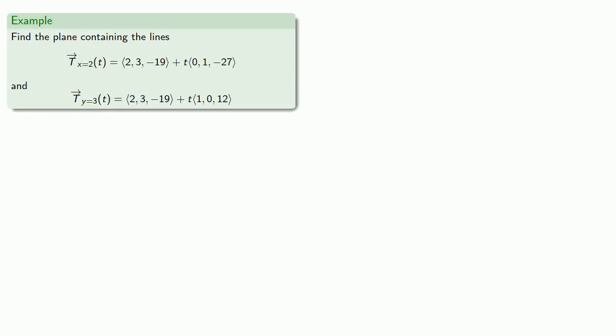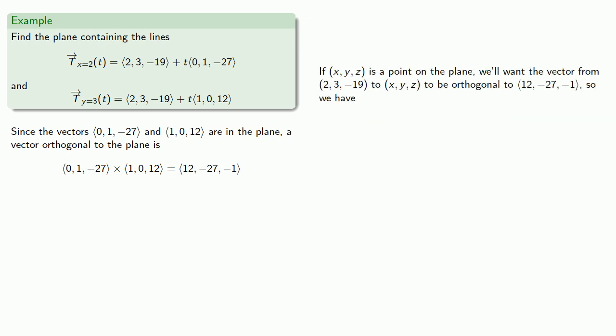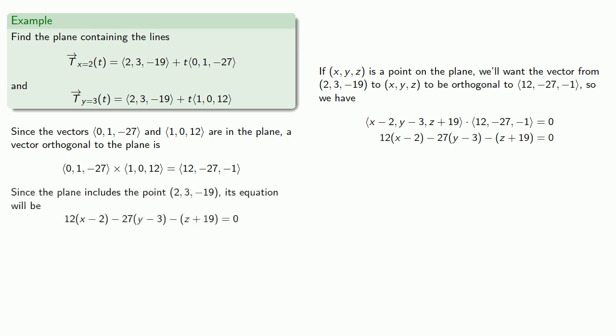So let's actually find that plane. So we know the equations of both lines. So since the vectors 0, 1, negative 27, and 1, 0, 12 are in the plane, a vector orthogonal to the plane is going to be the cross product. So we find the cross product. So if xyz is a point on the plane, then we'll want the vector from 2, 3, negative 19, that's one point in the plane, to the other will be orthogonal to our vector. And so we have the dot product equal to 0. And that gives us the equation of the tangent plane.